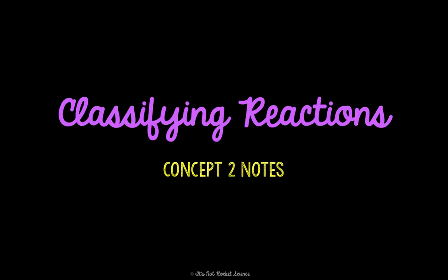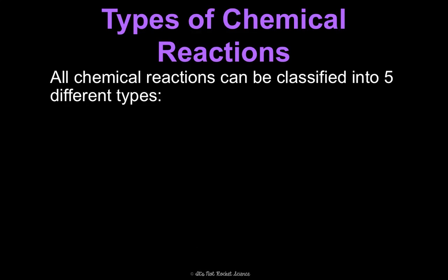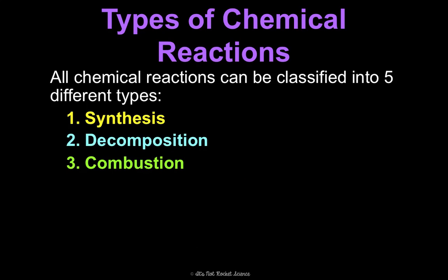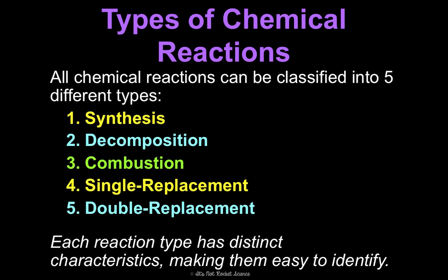All chemical reactions can be classified into five different types: synthesis, decomposition, combustion, single replacement, or double replacement. Each reaction has very distinct characteristics, making them easy to identify. I'm going to walk through each of the five types, and after I talk you through the characteristics of how to identify them, I'll give you a demonstration of what it looks like in real life so you can see for yourself.